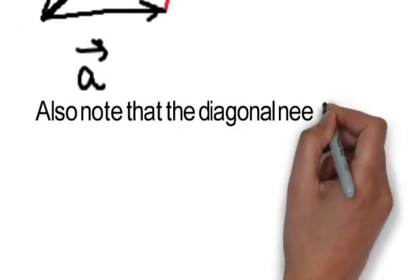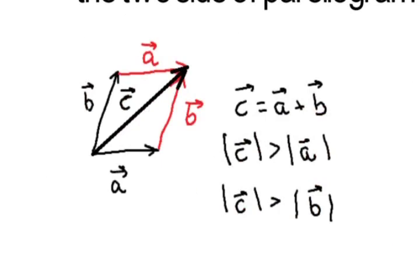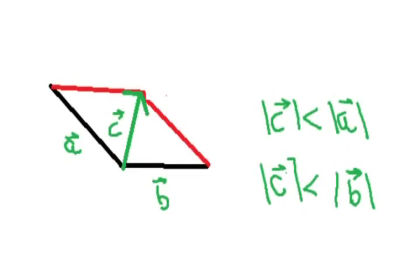Also note that the diagonal need not be necessarily greater in magnitude than the sides of a and b. For example, in this case, when the angle between a and b is small, c can be smaller in magnitude than the magnitude of a and b.